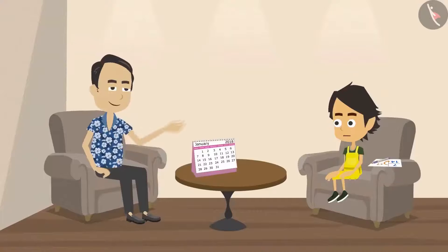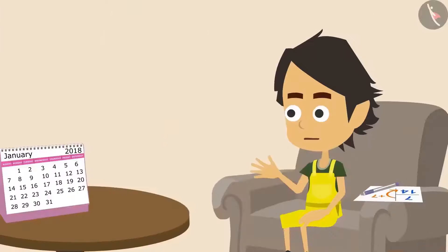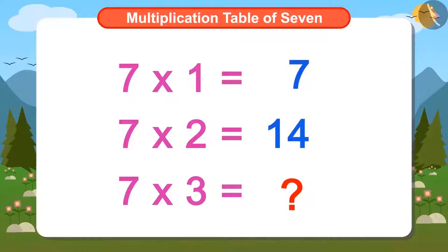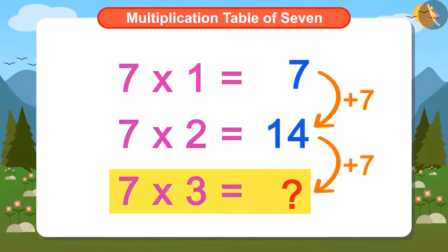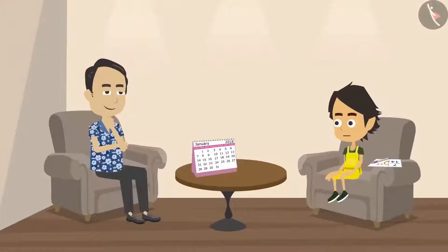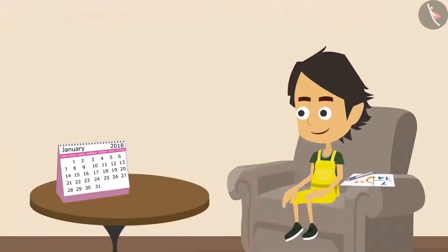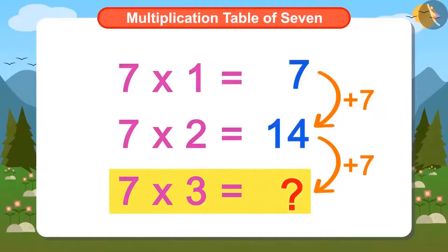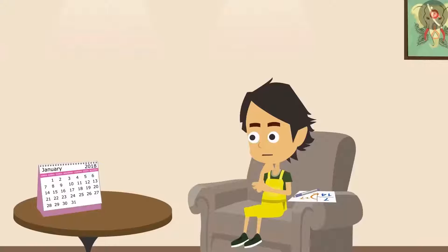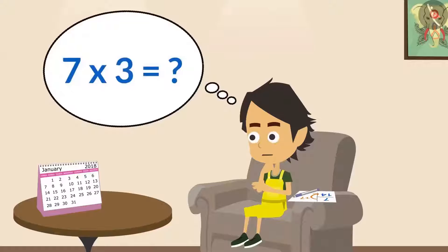Ayushman is thinking. Papa asked why he was unable to answer. Ayushman explained that the first Sunday is 7 multiplied by 1, that is 7th. The second Sunday is 7 multiplied by 2, that is 14th. So the third Sunday's date will be 7 multiplied by 3. But he does not know the multiplication table of 7, so without paper and pen he cannot answer this question. Papa understood Ayushman's problem and asked him if he knows the multiplication table of 3. Ayushman tells Papa that he does. Then you can easily find what 7 multiplied by 3 is.